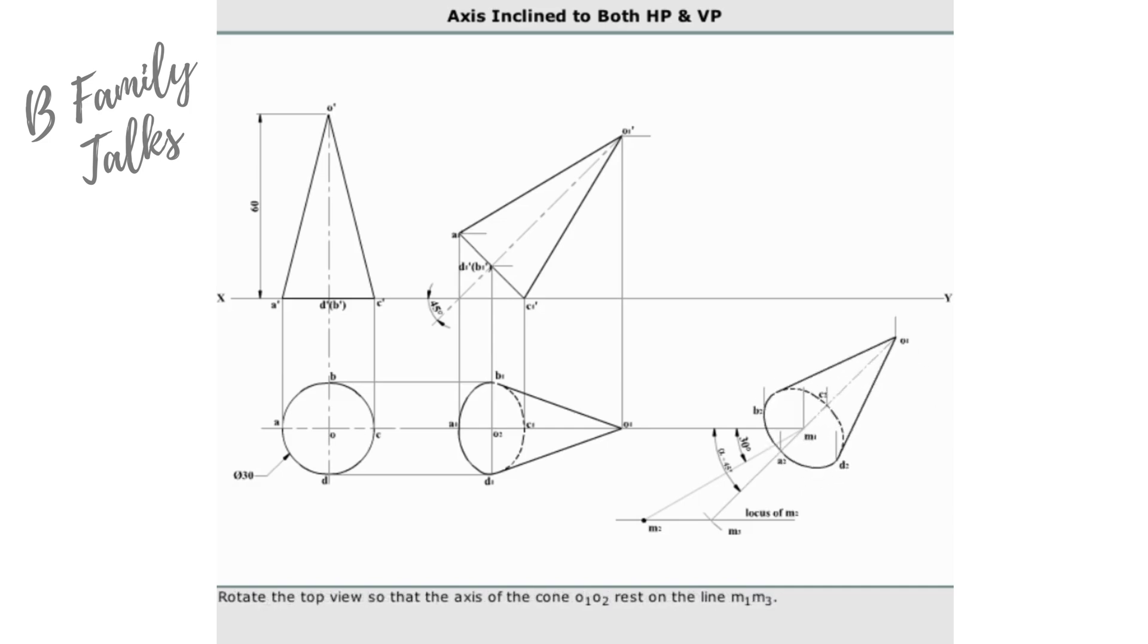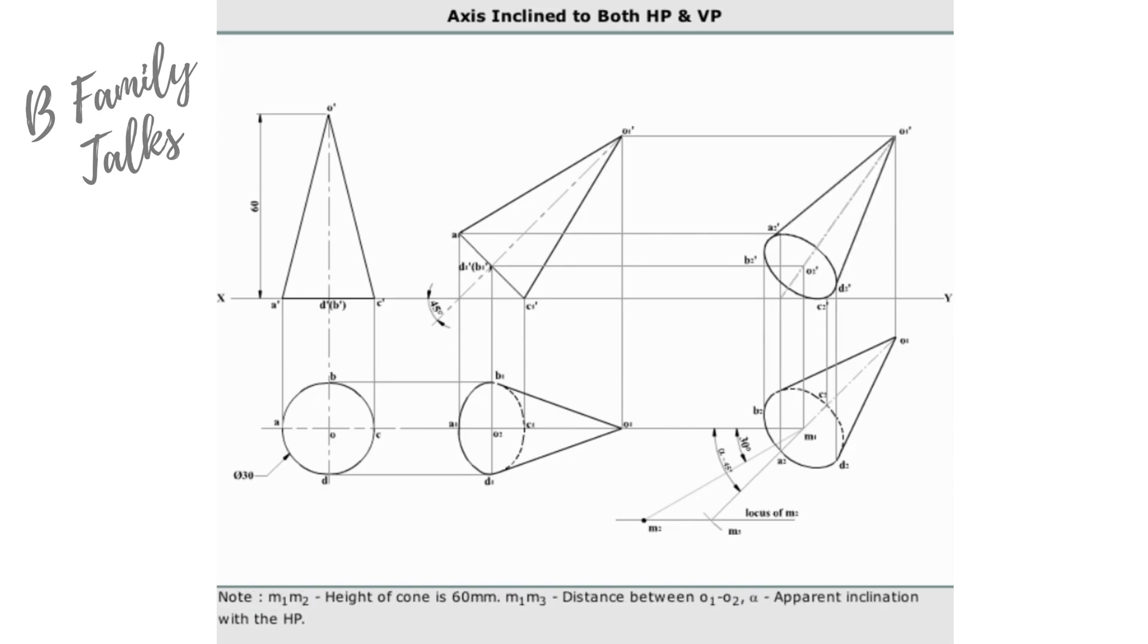Rotate the top view so that the axis of the cone O1 O2 rests on the line M1 M3. Note that M1 M2 corresponds to the height of the cone, which is 60 millimeters.